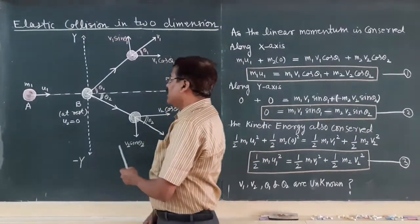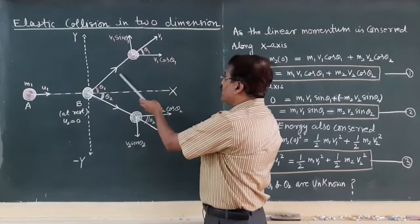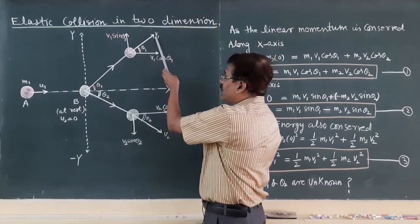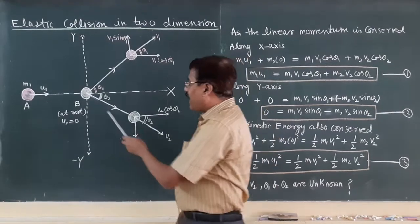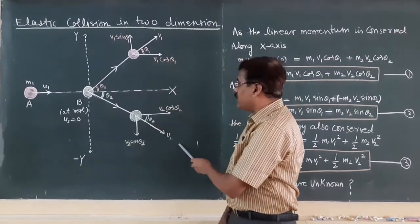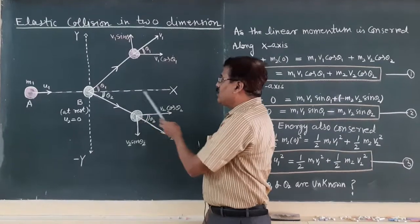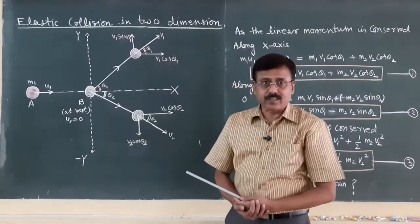After collision the object A is moving with velocity v1 at angle theta 1 from x axis and object B is moving with velocity v2 at angle theta 2 with respect to x axis.